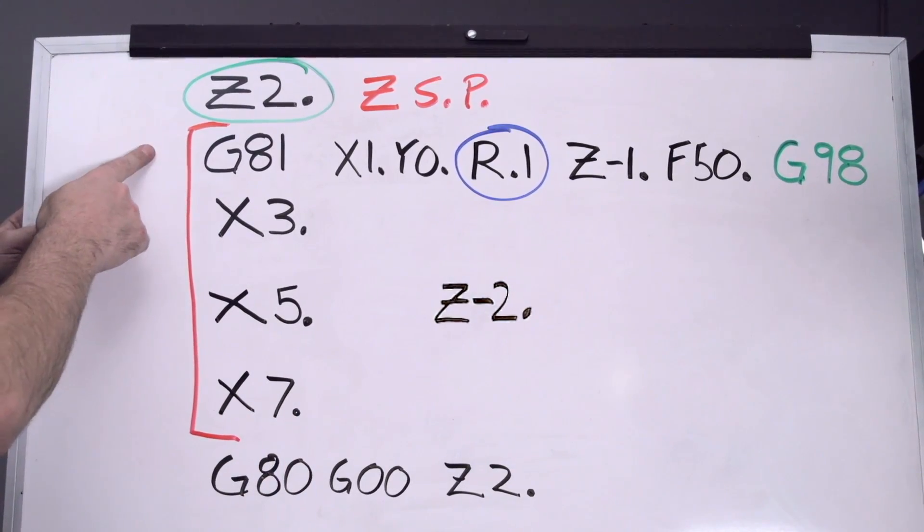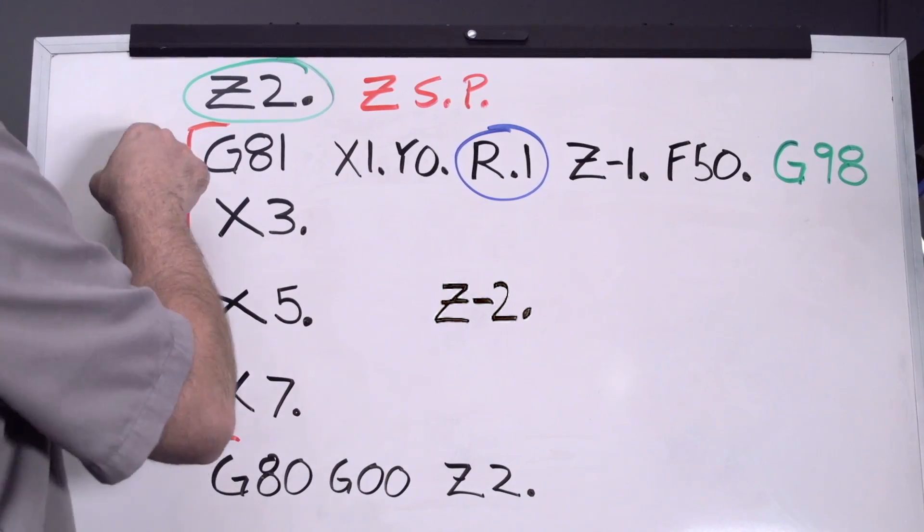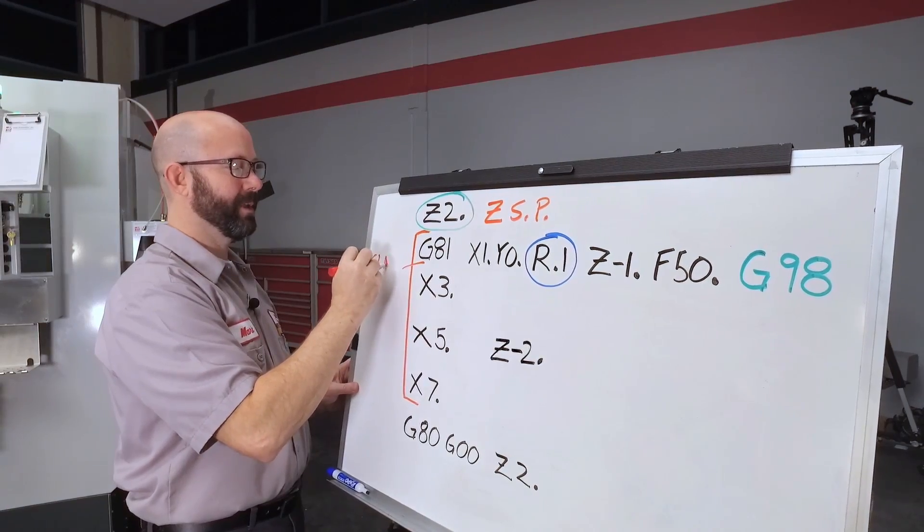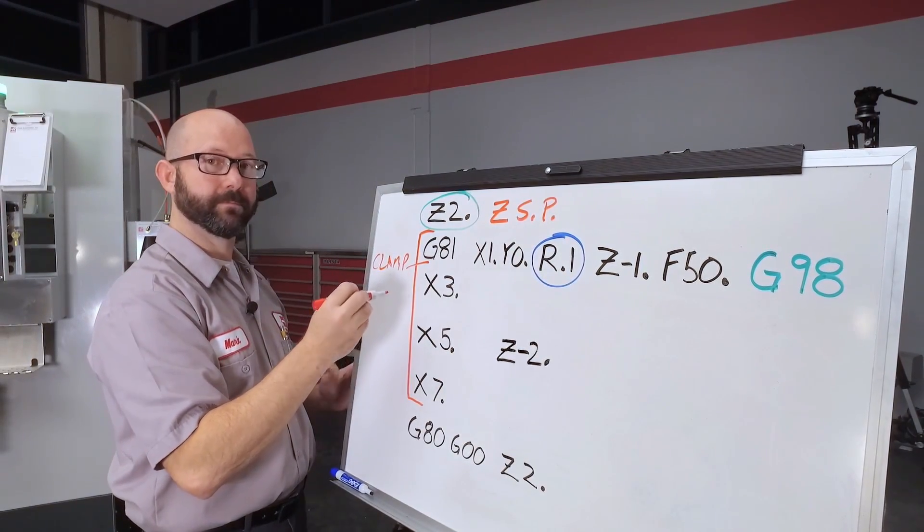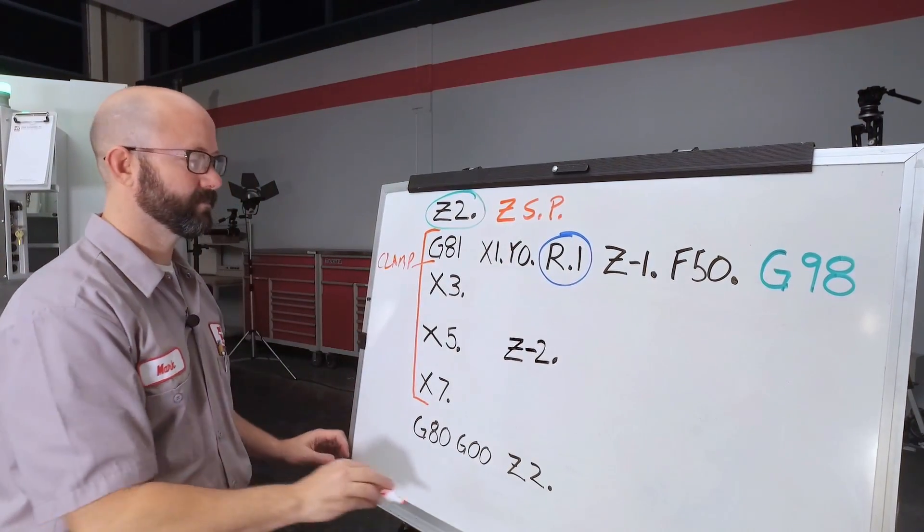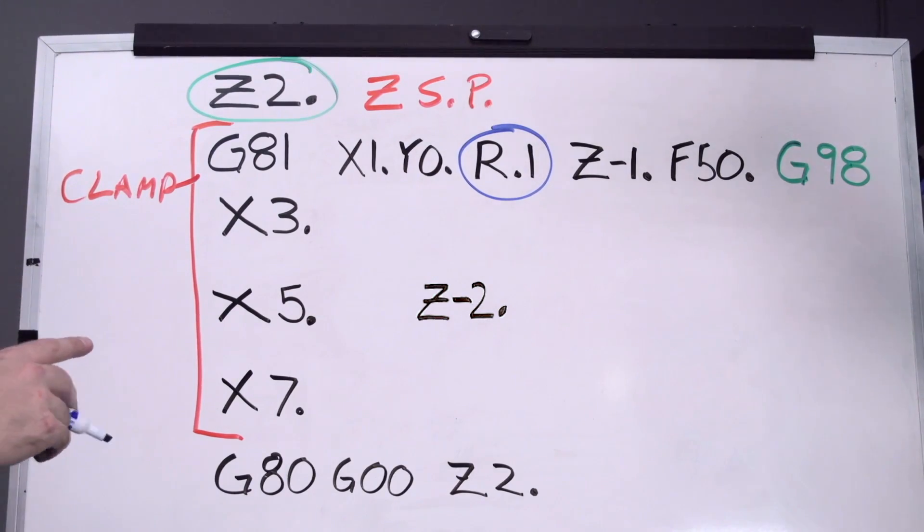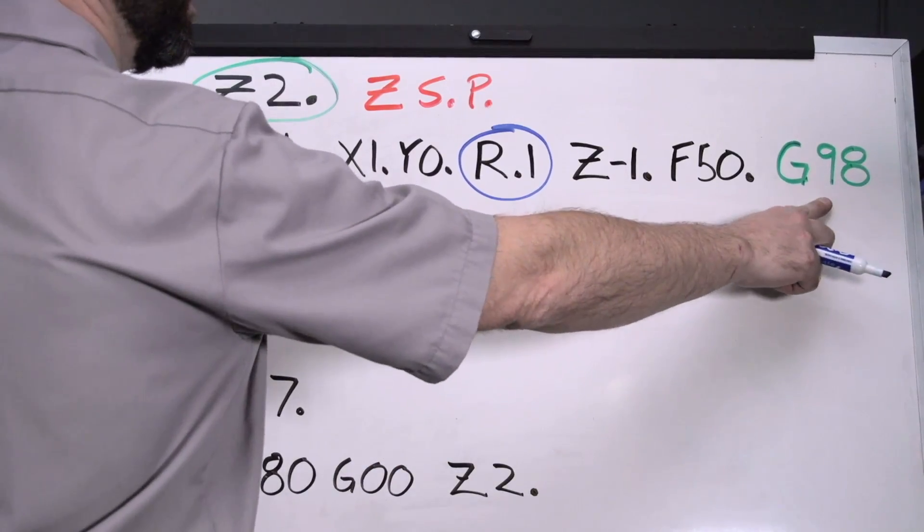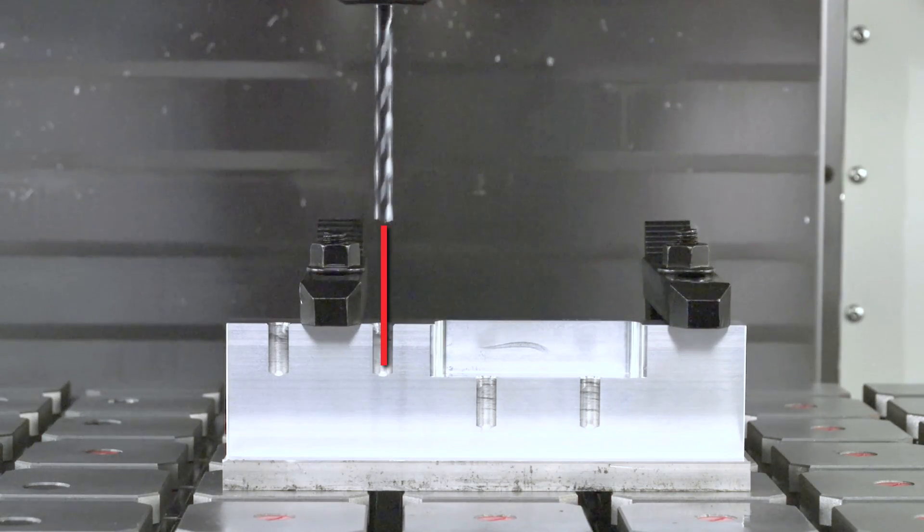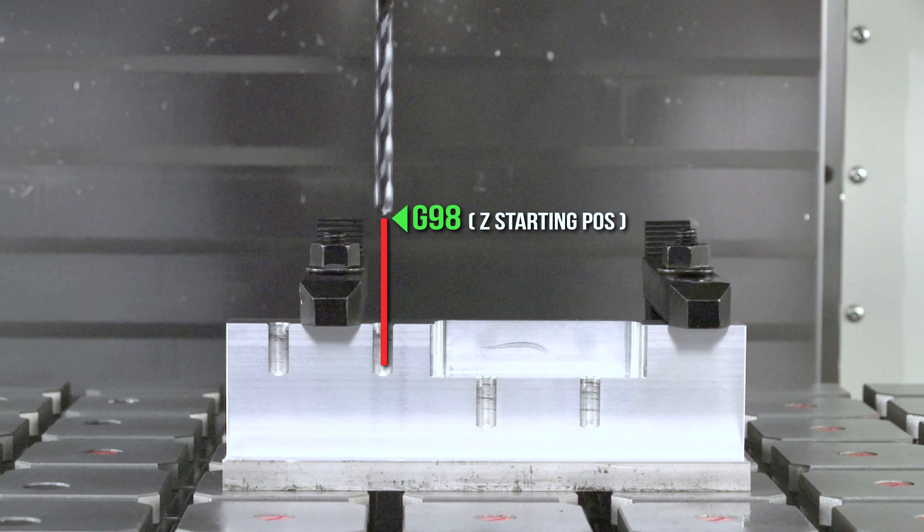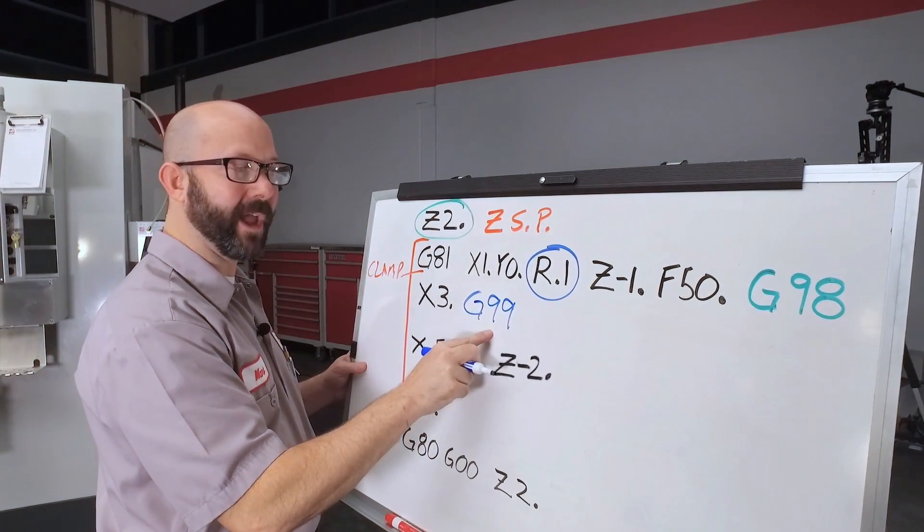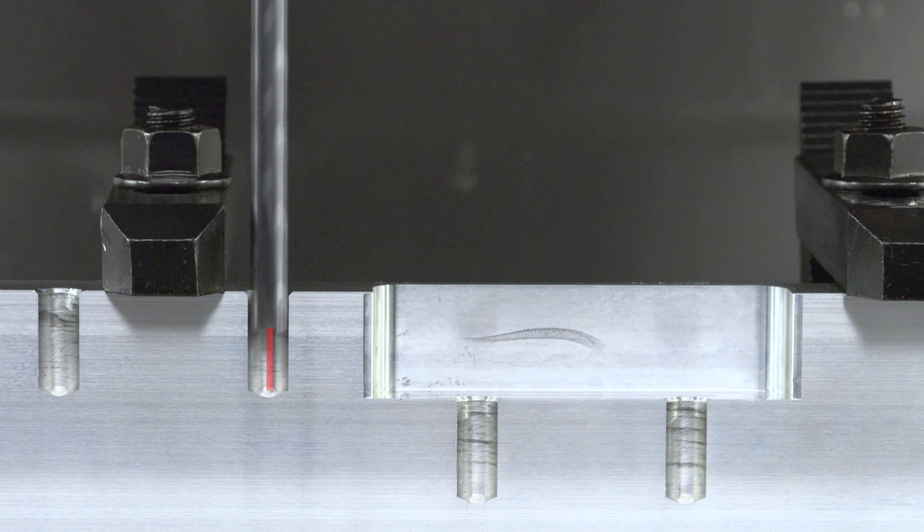The first line here is our first hole. It ran pretty good. At the end of that hole, it retracted two inches above the part, which cleared that clamp that was resting in between holes one and two. So now we're ready for hole two. Now, this second hole is going to go through the same normal order of operations. When it's done drilling the hole, it's going to retract, but there's no longer a reason to go two inches above the part. We've already cleared the clamp. So from here on out, we're going to use a G99. When it's done drilling, it's going to retract to this R.1 value. Perfect.